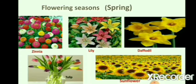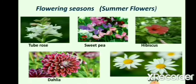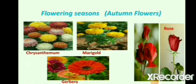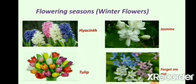Flowering seasons. Flowers do not bloom in all seasons. Most of them are season-specific, though some flowers bloom throughout the year. Flowers that bloom in spring are sunflower, tulip, daffodil, and lily. Flowers seen in summer are tube rose, hibiscus, daisy, etc. Flowers that bloom in autumn are chrysanthemum, marigold, rose, etc. Some winter flowers are tulip, jasmine, and forget-me-not.